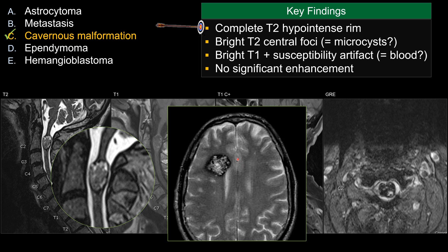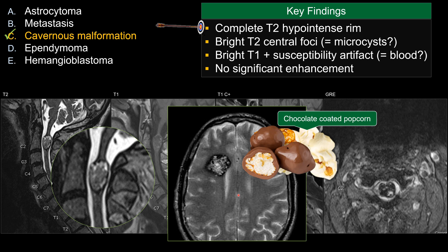This is a real image for this patient. A similar lesion shows a complete hemosiderin rim around a very lobulated, bright T2-center mass lesion, which is classic for cavernous malformation. Some people describe that as a lobulated or popcorn-like lesion. To me, it always looks like a chocolate-coated popcorn — with a dark T2 rim and a bright T2 center.